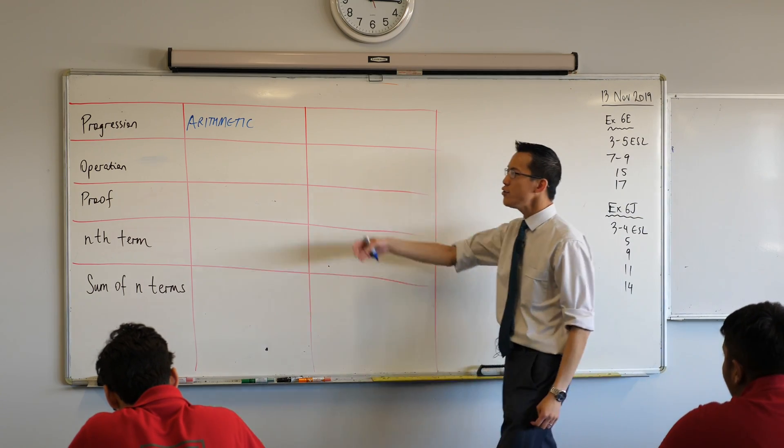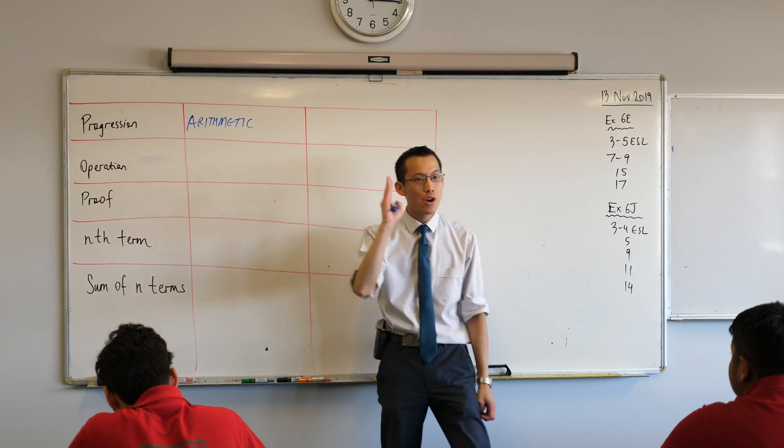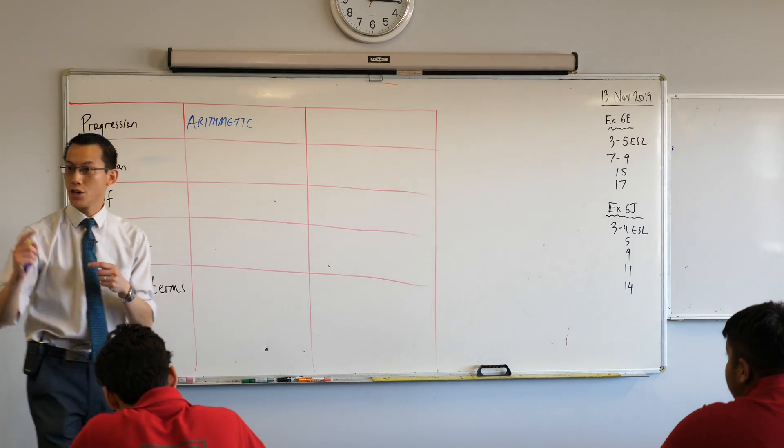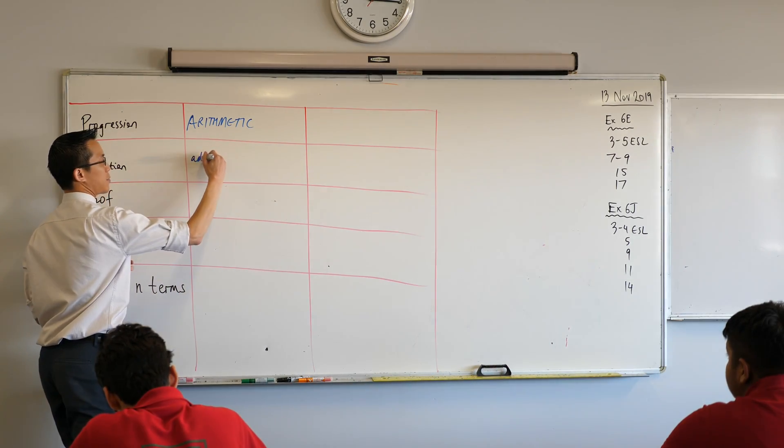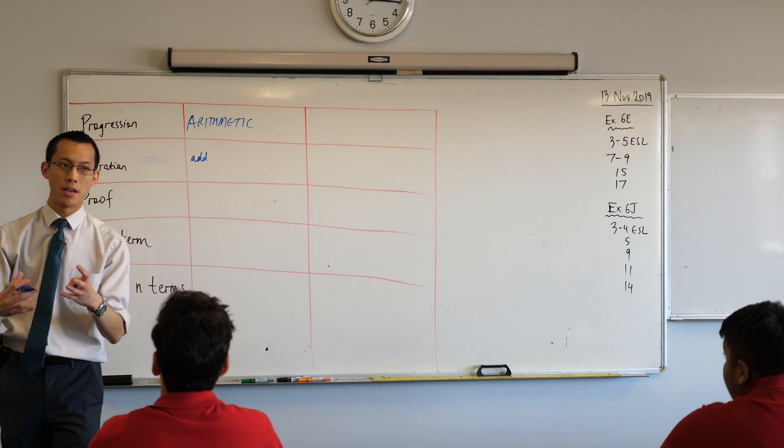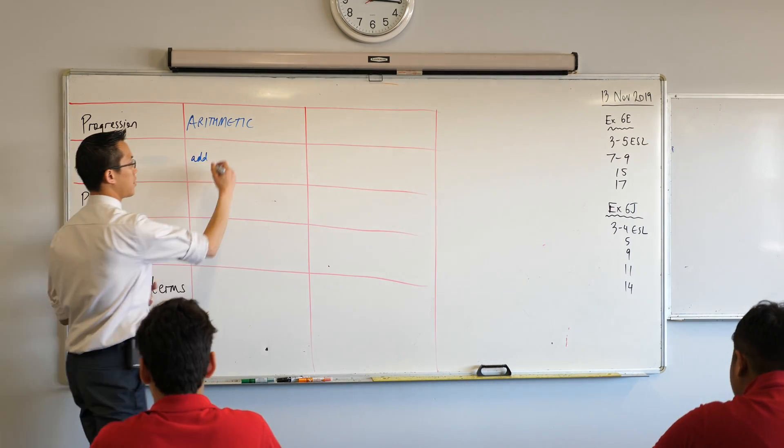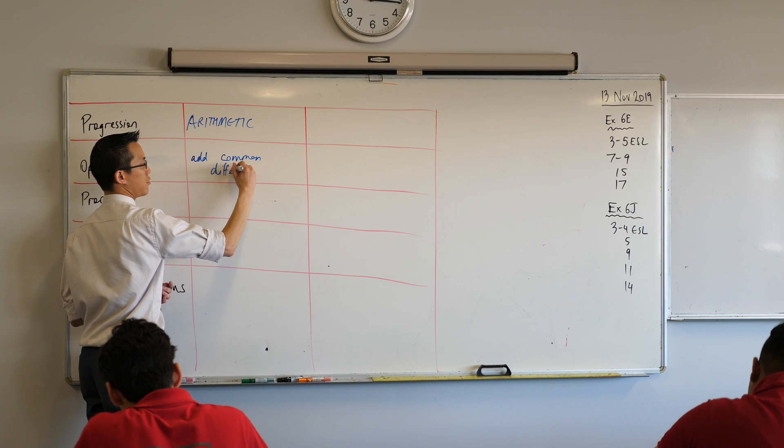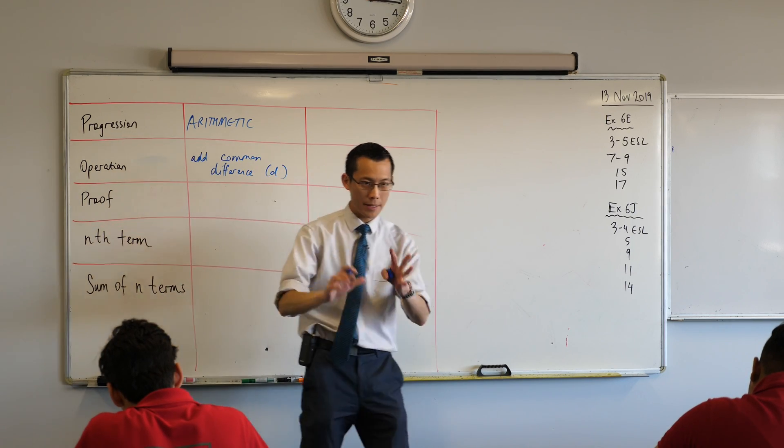So firstly, how do you make an arithmetic progression? How do you go from one term to the next? What do you do? What operation do you do? You add, and specifically what you add is a common difference, very good. And because it's a common difference we call that value, we call it D for difference. No big deal.